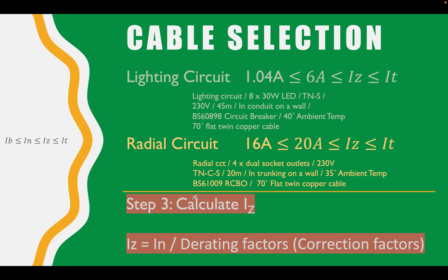We're on to step three, which is calculating our IZ, which is the current carrying capacity of the cable in the installed conditions. We're going to use this formula: the current carrying capacity of the cable, the IZ, is equal to the rating of the protective device, the IN, divided by the derating factors, or correction factors, multiplied together.